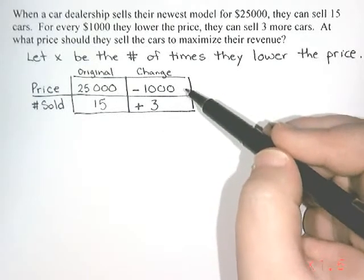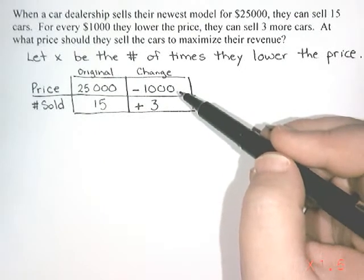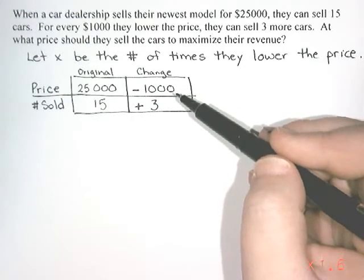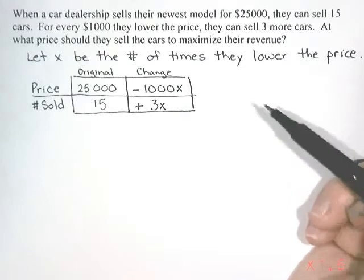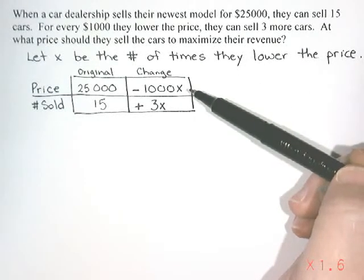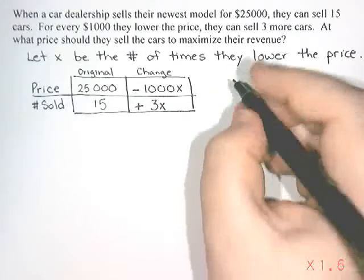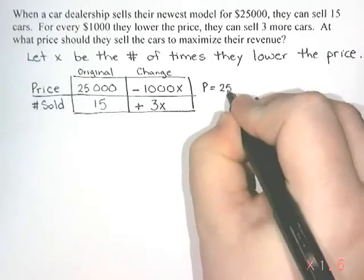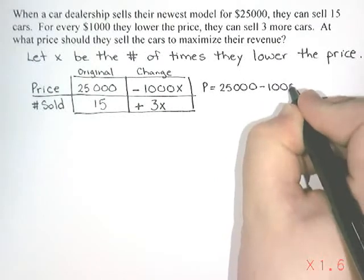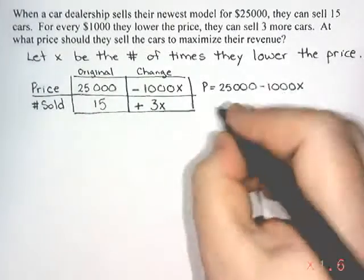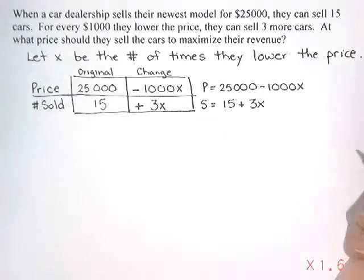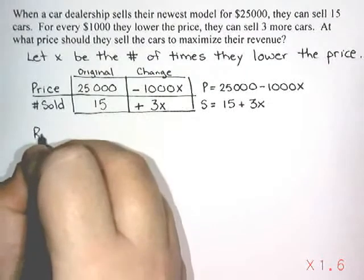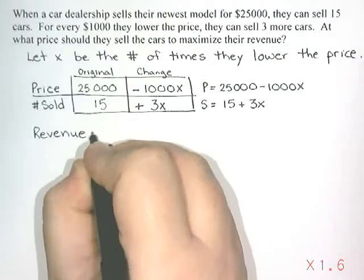If I think about the price: if they lower it once, they take off $1,000 and it's $24,000. But they might lower it twice, three times, or more. So we multiply the change by the number of times they're going to change it. If they lower the price five times, we take off $1,000 times five, or $5,000. That means the price is going to be $25,000 minus $1,000x, and the number sold is going to be 15 plus 3x. Revenue is the amount of money you take in from selling something — revenue equals the number sold times the price.